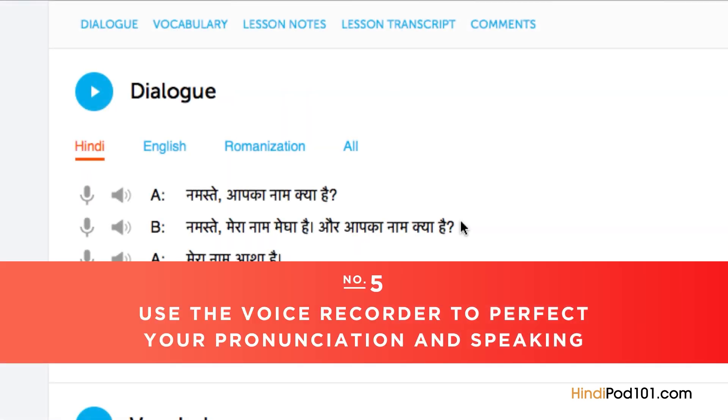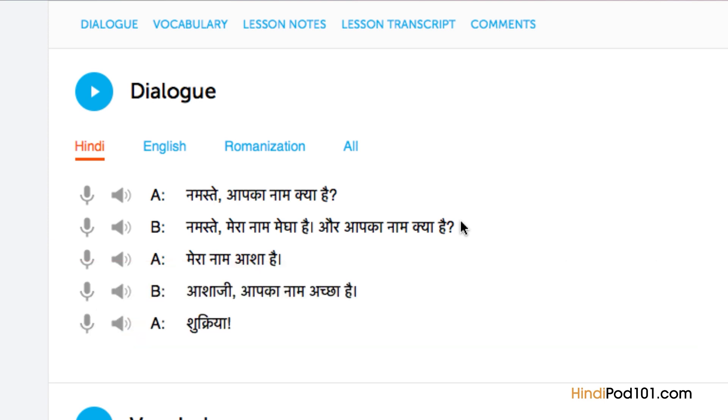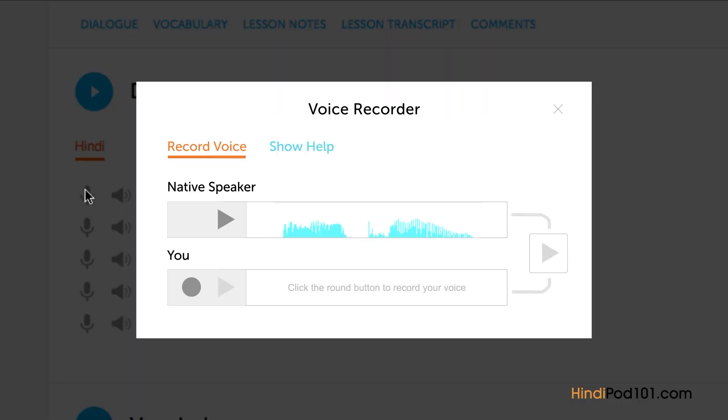Number five, use the voice recorder to perfect your pronunciation and speaking. In the dialogue study tool, you'll find a microphone icon next to each line. Click on it to record your voice. Then, compare it with the native speakers. Listen and adjust your pronunciation until you match that of the native speaker.